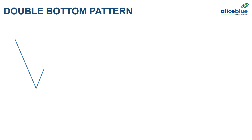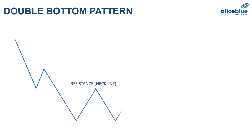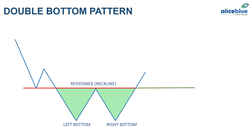The price is falling from a higher level to a lower level. At the lower level, there is a pattern formation. It consists of two swing lows which look like two bottoms — the right side bottom, known as the right bottom, and the left side bottom, known as the left bottom. The swing high, where we can draw a horizontal line, is known as the neckline or resistance. If the resistance or neckline is taken out, we can expect the price will get a rally from that level. And that is our entry.